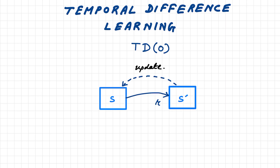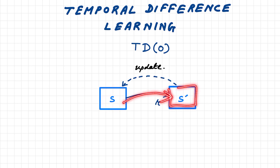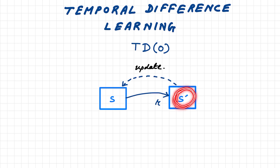Before going to talk about the SARSA algorithm, we need to talk about something called temporal difference learning. In particular, we are going to discuss TD(0) — temporal difference 0. There is another variant called TD lambda, but in this video we only discuss TD(0). Unlike the Monte Carlo approach we discussed in our previous video, in temporal difference learning we don't have to wait till the end of the episode to update the value of the previously encountered state. We can simply apply an action, move to the next state, and then update the value of the previous state by observing the reward as well as our previous guess of the next state.